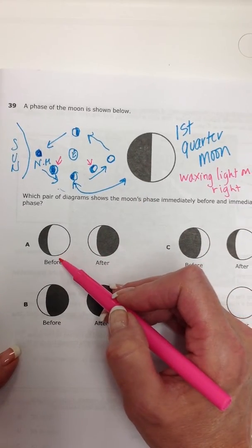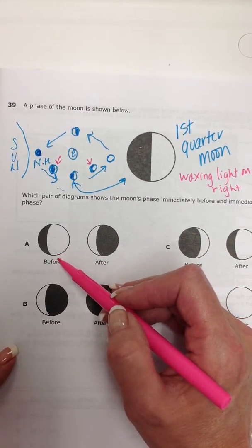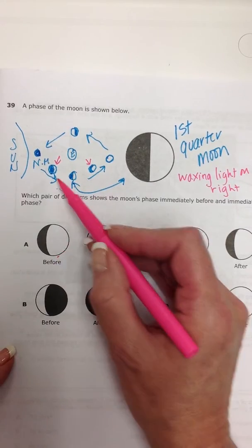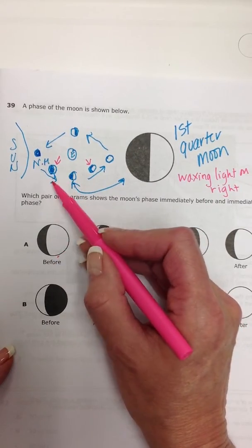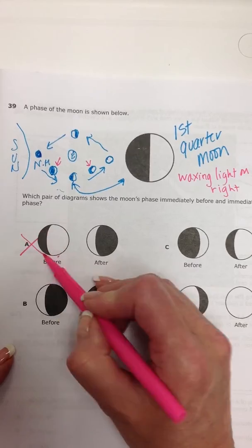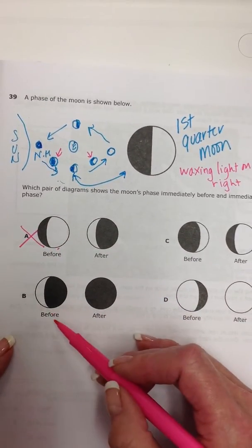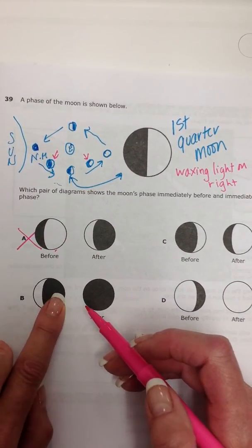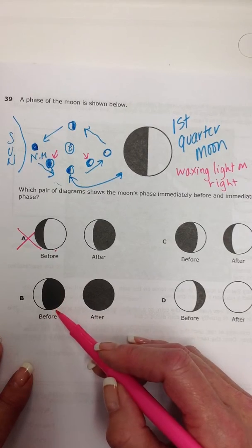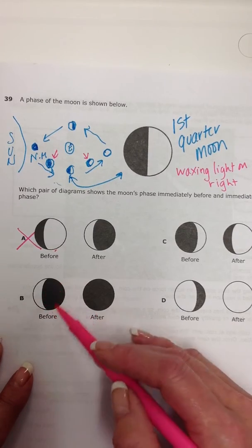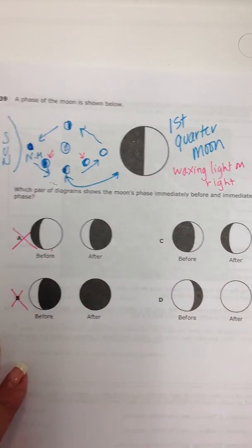So, all right, this would be a before. Or no, because before we said it needs to be a waxing crescent. So this is already out. Well, if the crescent was on this side, we might have even considered this one. But this is a waning crescent. The light is not on the right. That's out.